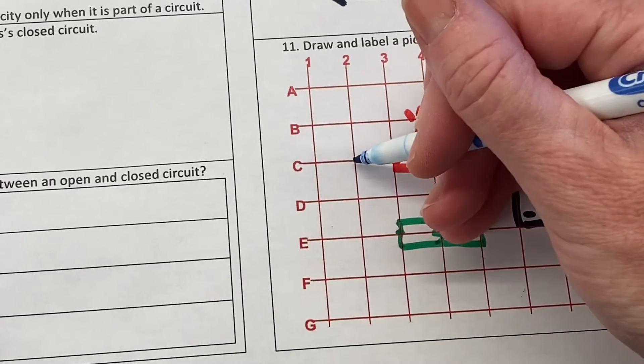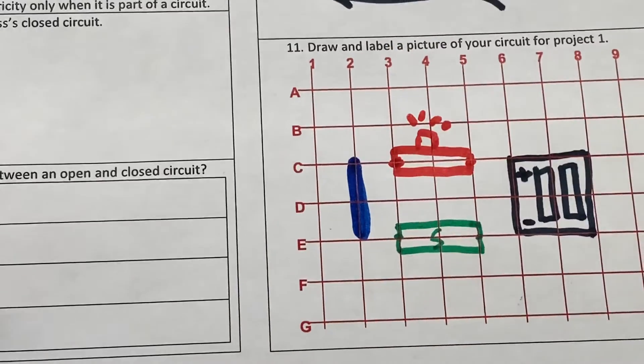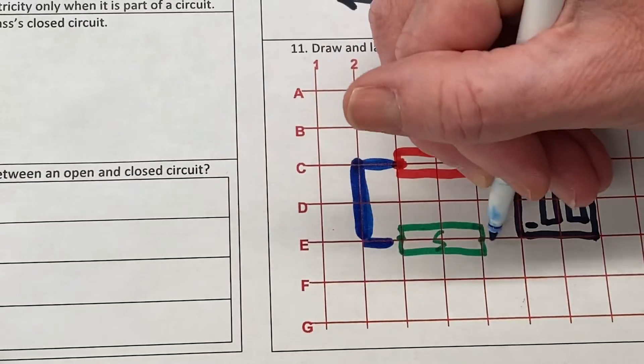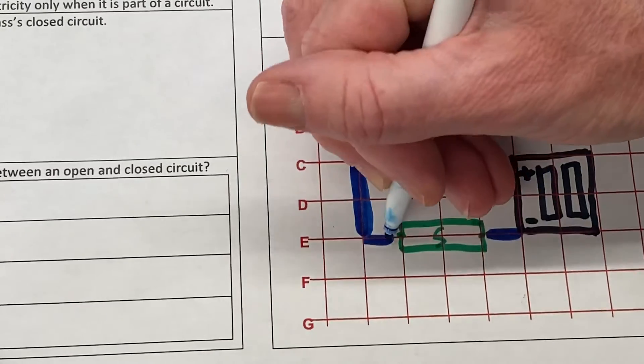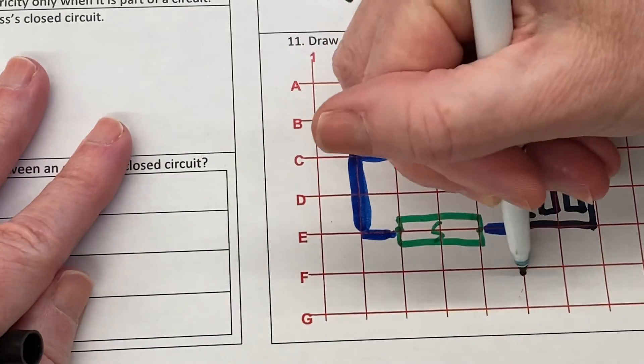And then I've got connector pieces that connect the light and the switch back to the battery pack. And then I'd like to show that the electrons are traveling in this direction and back into the battery.